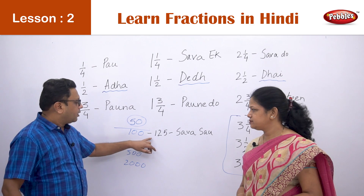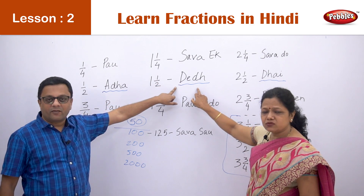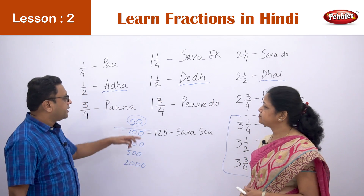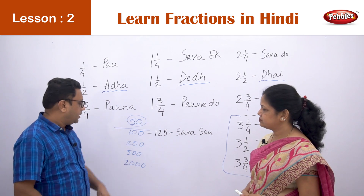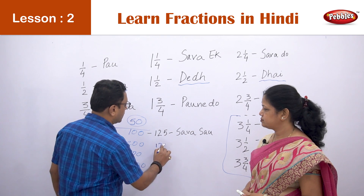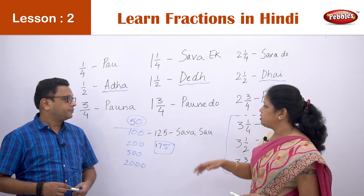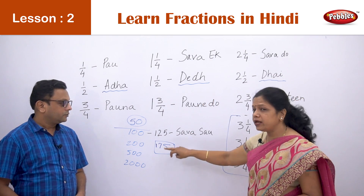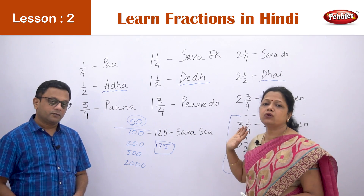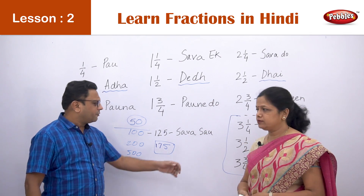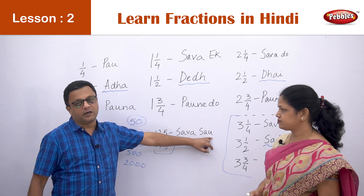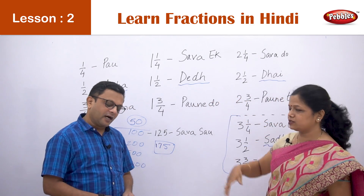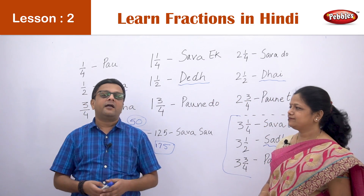For one hundred and fifty, we use again the word 'Dedh' and because it is more than hundred we add 'Sau' to it — 'Dedh Sau.' For one hundred and seventy-five, we use 'Pauna' and add 'Sau' — 'Pauna Do Sau.' It is actually very simple: 'Sau' means hundred, so whatever goes above hundred we keep adding the same words. And if it goes into thousands, we add 'Hazar.'